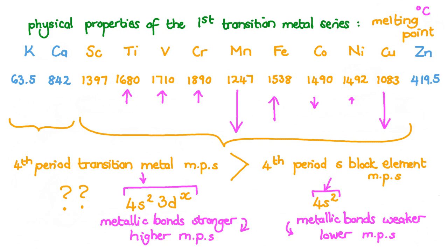It is interesting to note that calcium's melting point is higher than zinc's melting point, even though zinc has 3d electrons available for metallic bonding. We will not go into an explanation of this here, but I will remind you that zinc is technically not a transition metal.